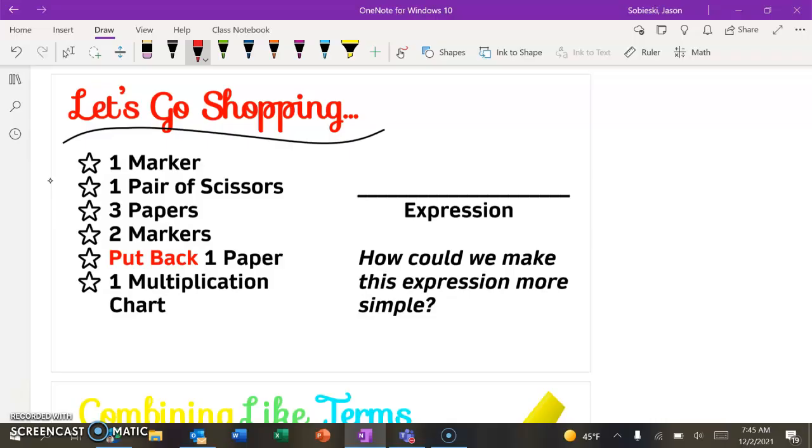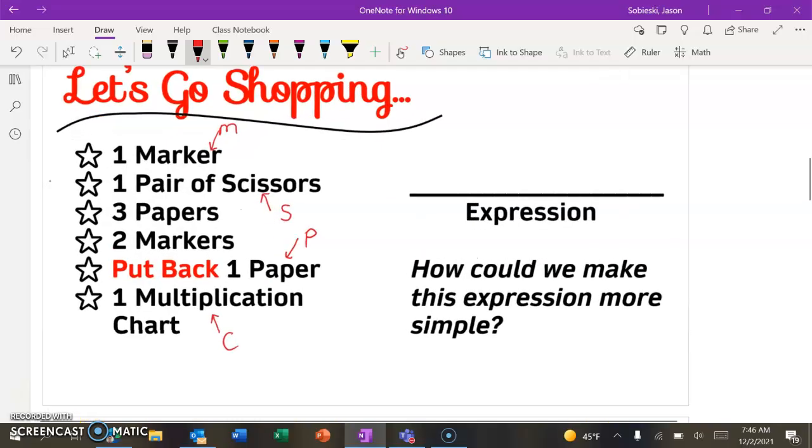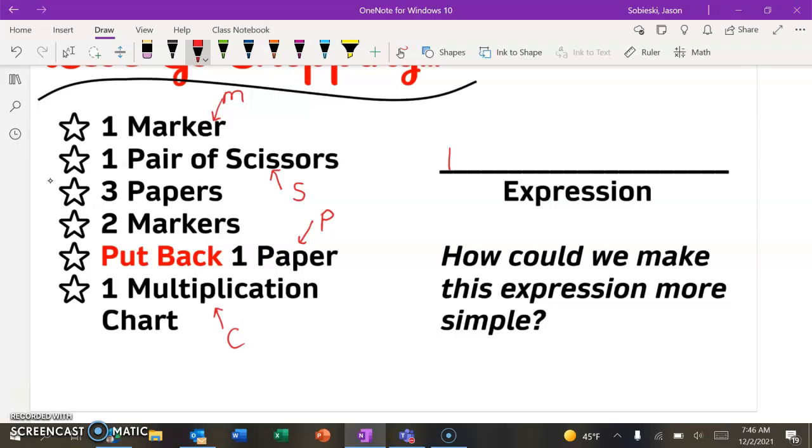So if it says one marker, markers I'm just going to represent with the variable m. Scissors, I'm going to represent with the variable s. Paper, I'm going to represent with the variable p. And then multiplication chart, I think I'll use a c, since we already used an m. So if we wanted to write an expression for this, let's just start writing each part. So we know we went and got one marker, so I'll write one m. Plus, then we picked up a pair of scissors, so one s. Plus, then we picked up three papers, so three p. We went back and got another two markers, so plus two m. When we go to put back one paper, that means return it to the shelf, so I would say that's going to be a subtraction symbol, so subtract one p. And then finally, we want to go grab one multiplication chart, so we'll go plus one c.